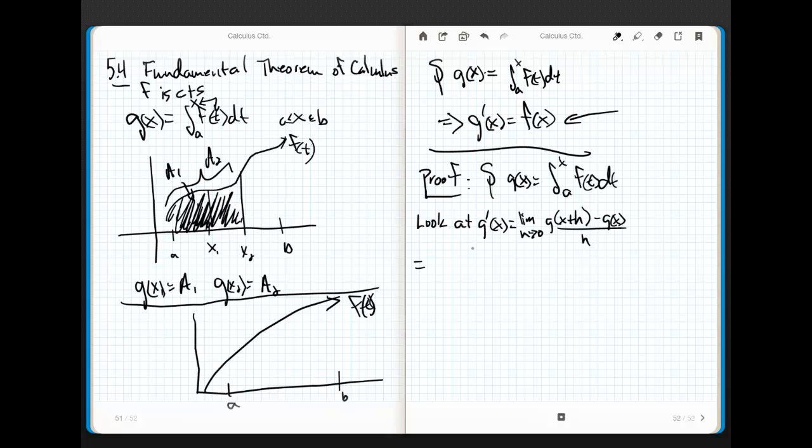Now, what is that really? We're going to deal with just this limit term. So, limit as h approaches 0 of—well, g of x plus h, what is that? If g of x is defined in this way, then isn't g of x plus h just the integral from a to x plus h of f of t dt, minus the integral from a to x, because that's what g of x is, of f of t dt, and this is all over h.